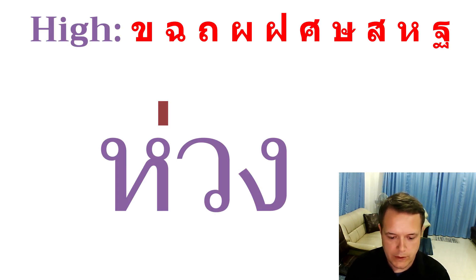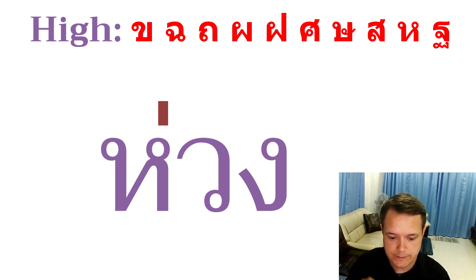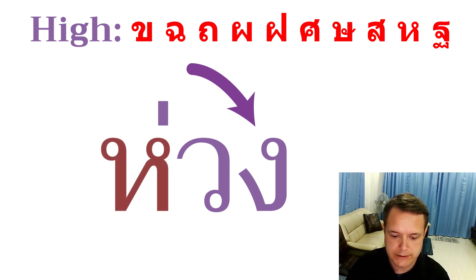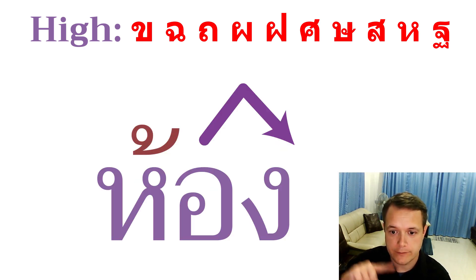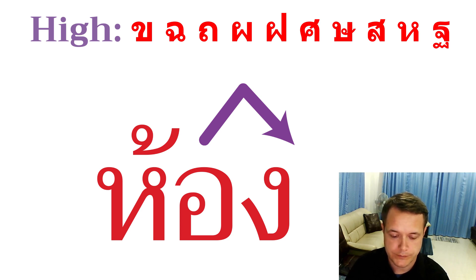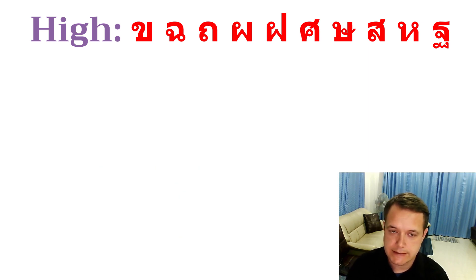Now let's break down the rest of the tone rules. Looking at the high class consonants: if we see mai egg — the little line — we know it is a low tone. If we see mai toe, then we know it will be a falling tone.